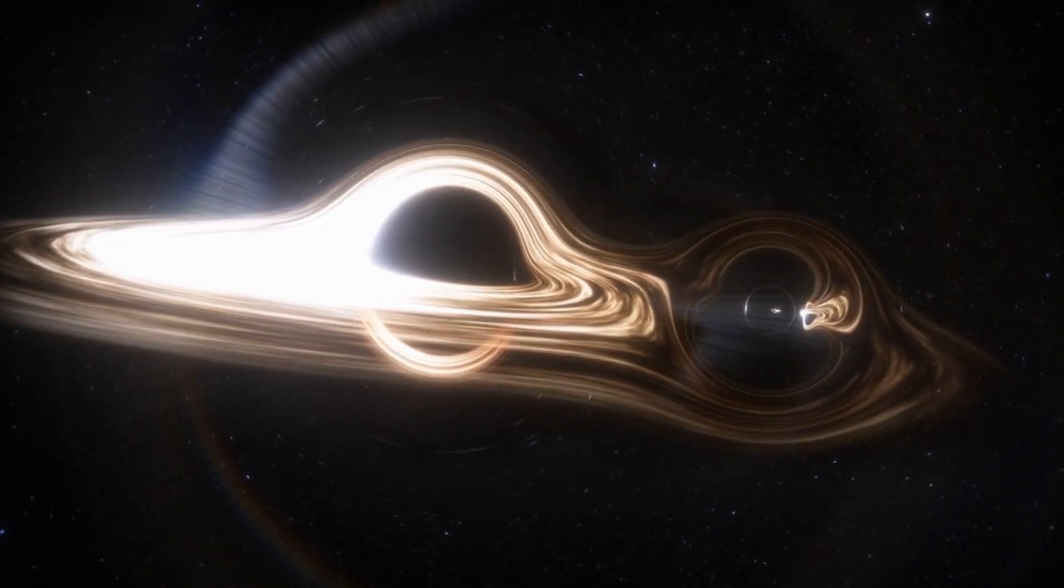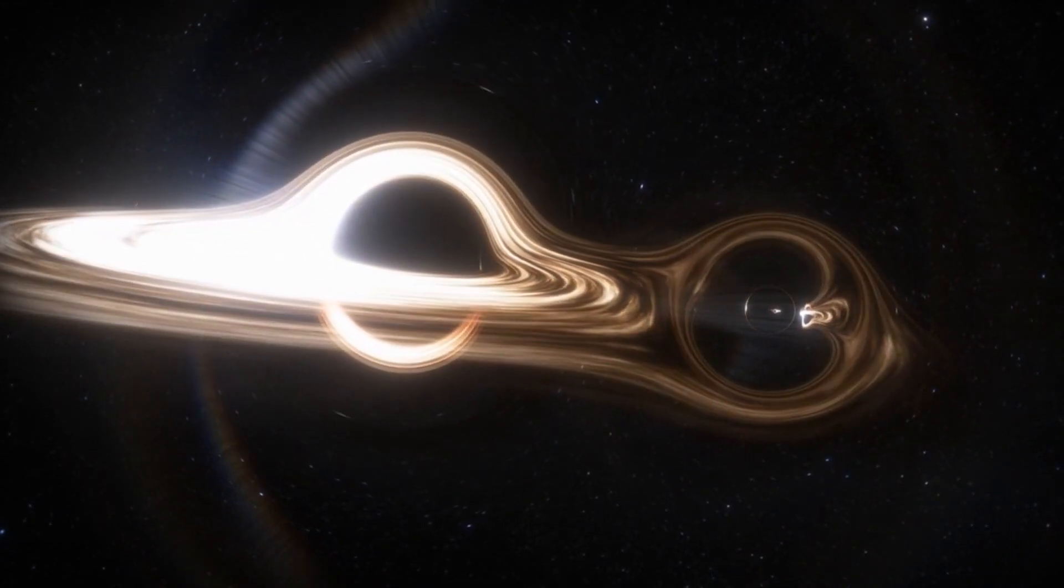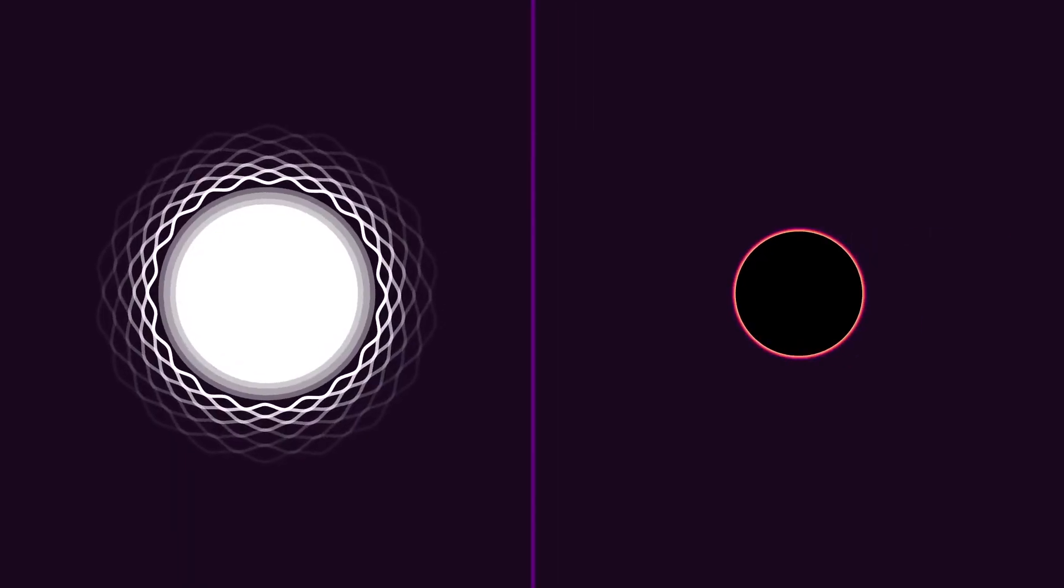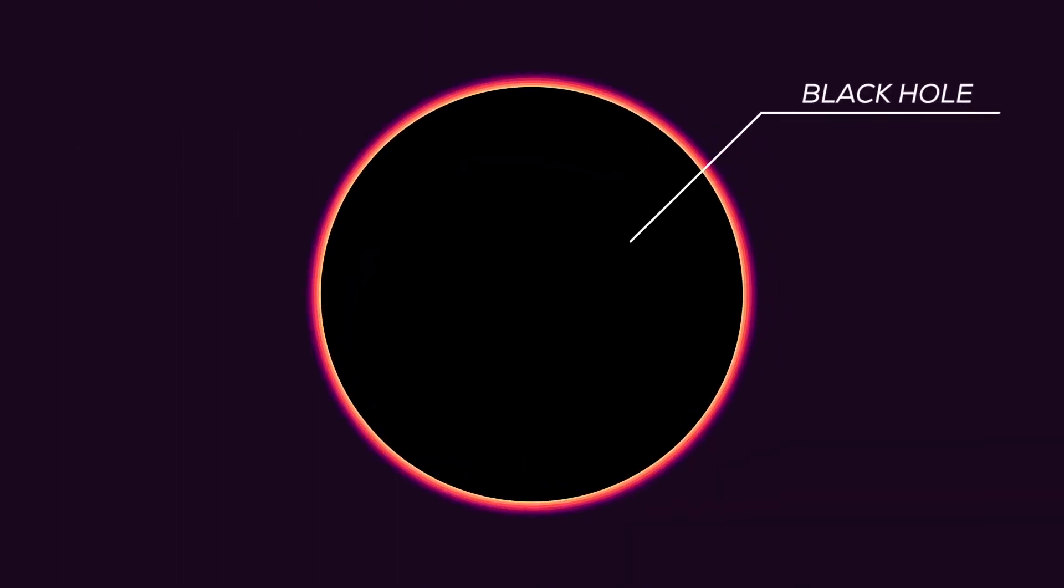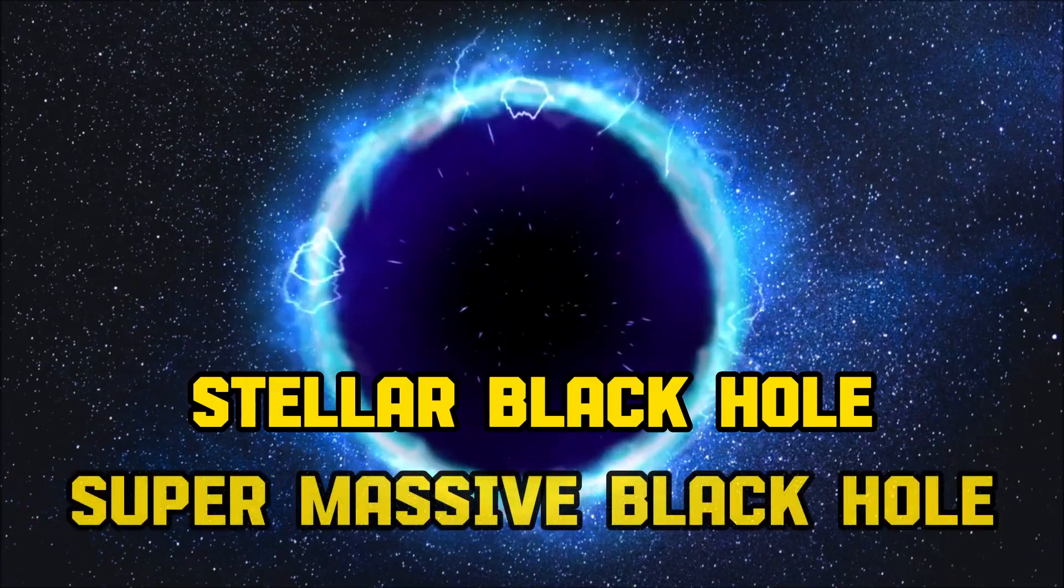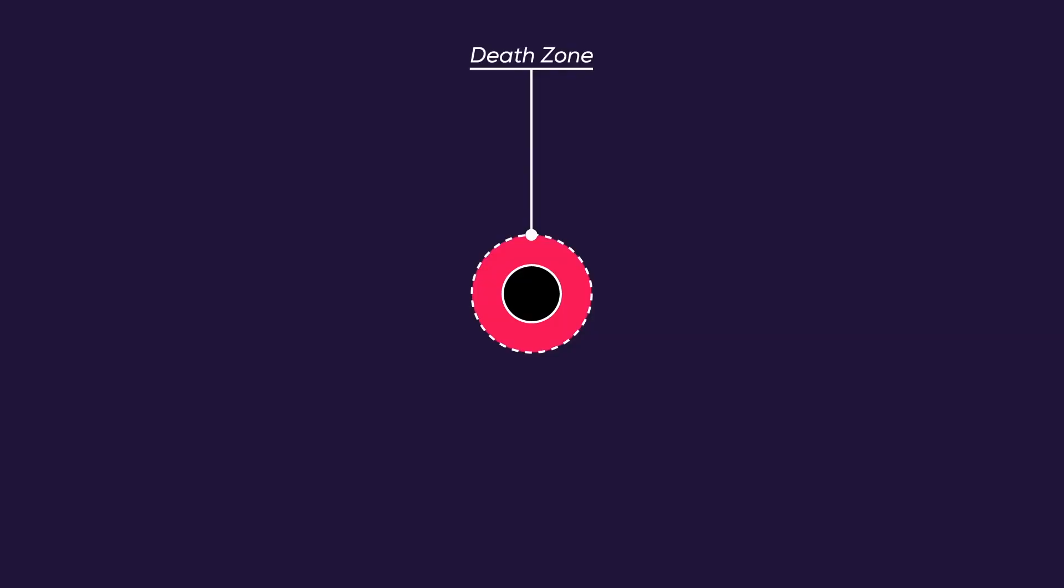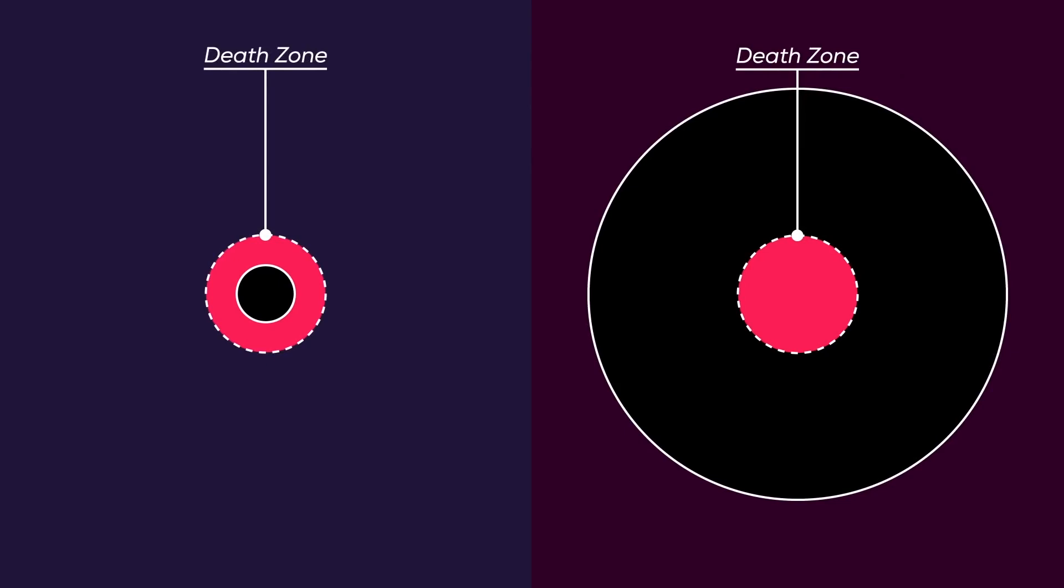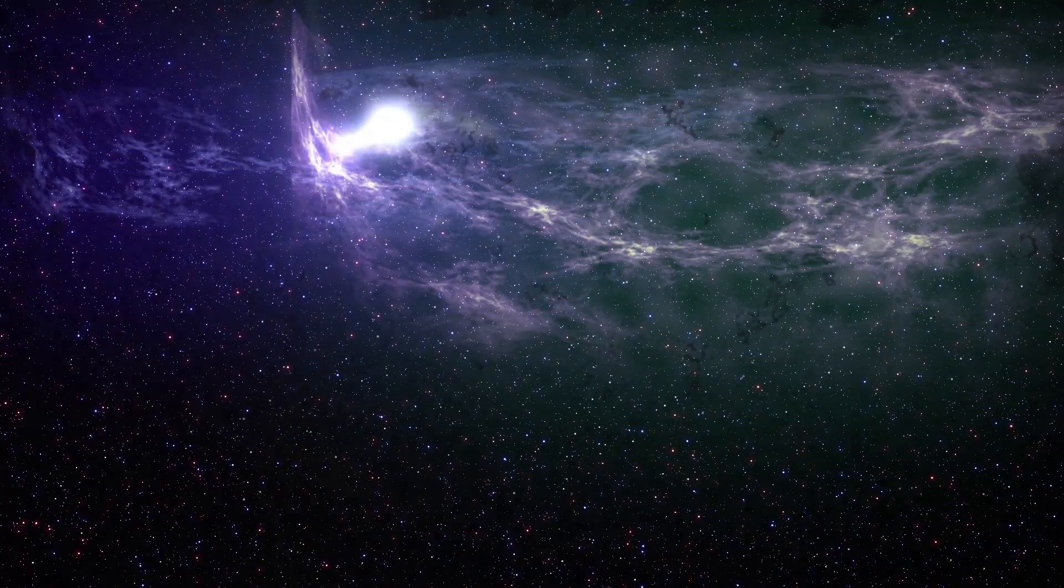Through years of observation, scientists have been able to discover two main types of black holes due to certain shared characteristics between members of each group. One is the stellar black hole, and the other is the supermassive black hole. The shared characteristics of these black holes are mostly focused on the size of the stars that form them.